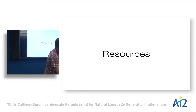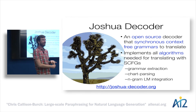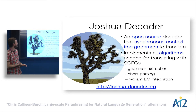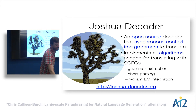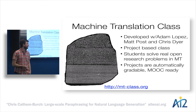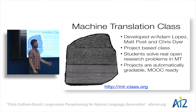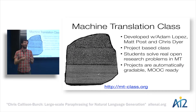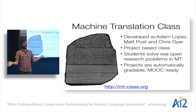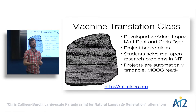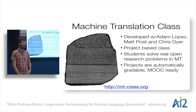I have a few resources to offer. One is the Joshua decoder, which implements all the algorithms needed to translate with synchronous context-free grammars — downloadable from joshuadecoder.org. If you're interested in learning more about machine translation, I developed a class with Adam Lopez, Matt Post (both at Johns Hopkins, though Adam has moved to University of Edinburgh), and Chris Dyer from Carnegie Mellon. It's a fun project-based class with open-ended research assignments that are objectively scoreable, so we can create a leaderboard and have fun competitions.